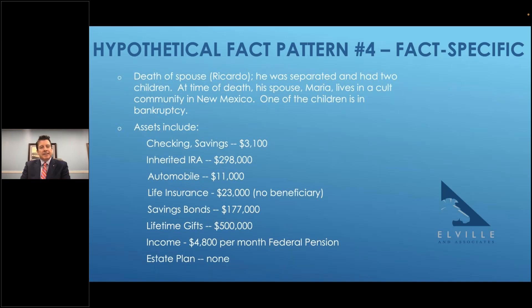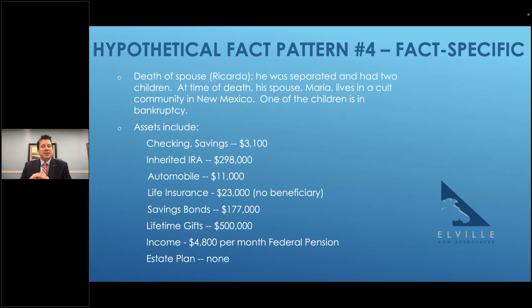Question: do you get an EIN number before or after death? Generally speaking, for fundamental planning like wills or revocable trusts, you're going to get an EIN number after someone dies — when there is an administrative estate that needs one, or a trust being established that needs one. Generally that is after death, unless there is an irrevocable trust being created during life.